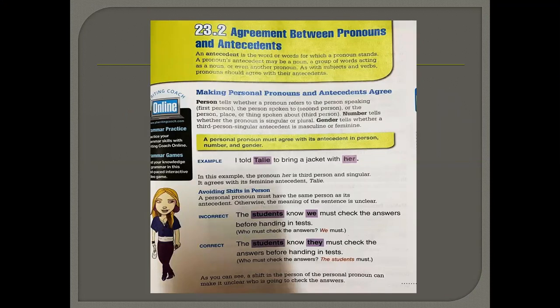An antecedent is the word or words for which a pronoun stands. We use a noun once, but then later on we replace it with pronouns. For example, if I use the noun Tally, I will use she, her, or herself later on in my writing. So there are three kinds of pronouns: first person, second person, and third person.